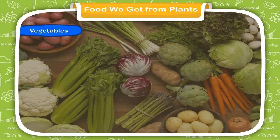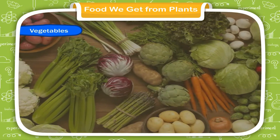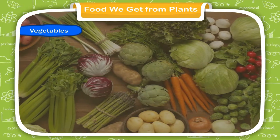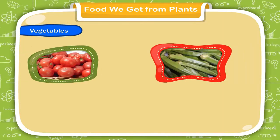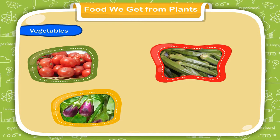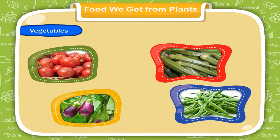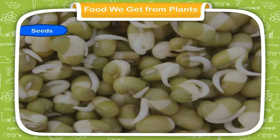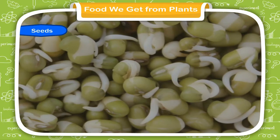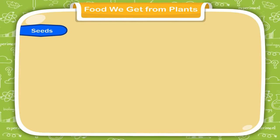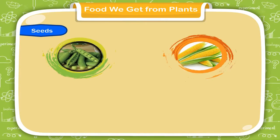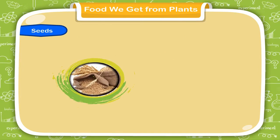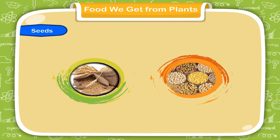Vegetables. We eat the fruits of some plants as vegetables, such as tomato, lady's finger, brinjal, beans, etc. Seeds. We eat the seeds of some plants such as peas, corn, graham, rice, wheat, pulses, etc.